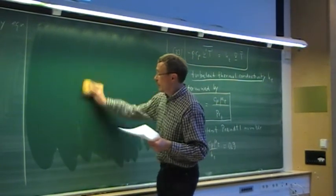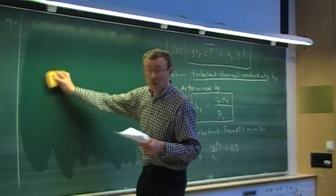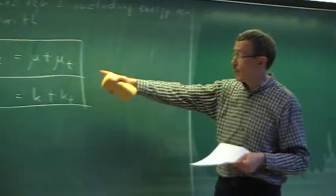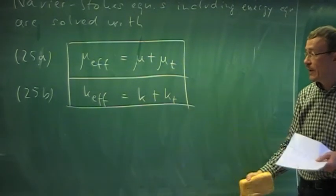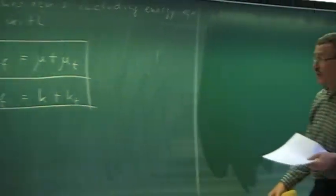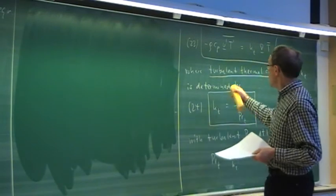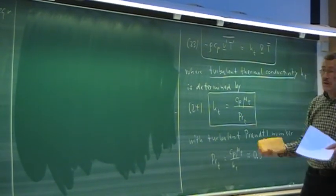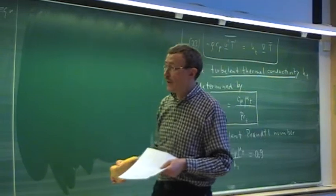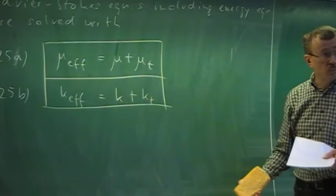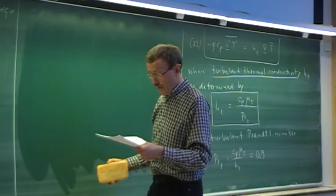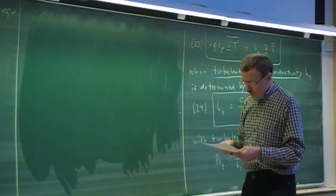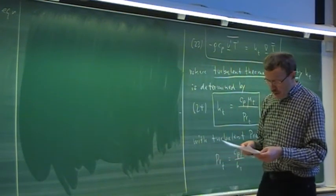If we use a higher-order model — for example the k-epsilon model — we can do that too. We then check whether the assumptions still hold, and simply replace k by k + k_T in the energy equation and solve.